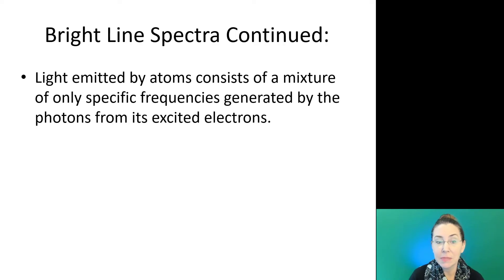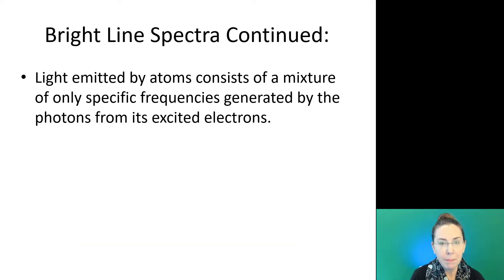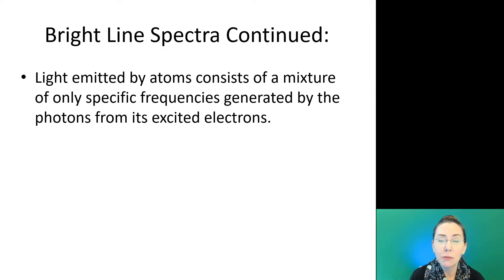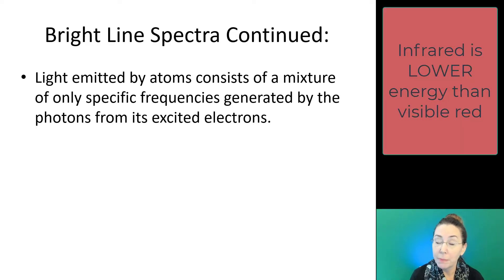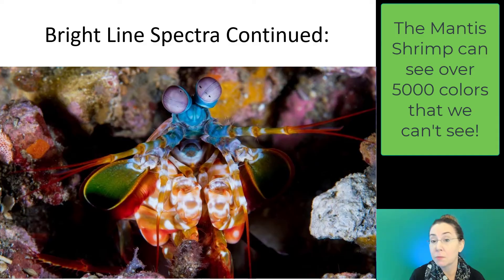The light emitted by atoms consists of a mixture of only specific frequencies of light generated by the photons from its excited electrons. We're not going to see the entire visible spectra here. In fact, some of the light emitted by these electrons is not visible at all. We can have very low energy light that goes beyond our realm of the visible spectrum, and very high energy light that goes beyond as well. You've got ultraviolet, which is very high energy light above violet, and infrared, which is very low energy light below red. Both of those can be emitted, but we're not ever going to visualize them with our eyes.